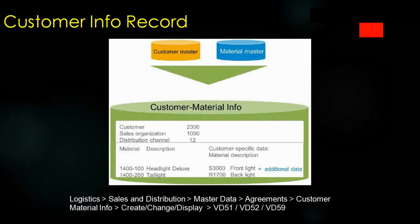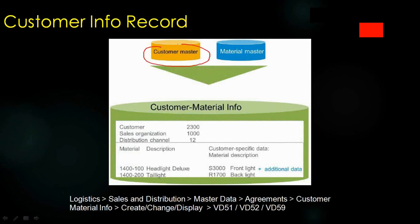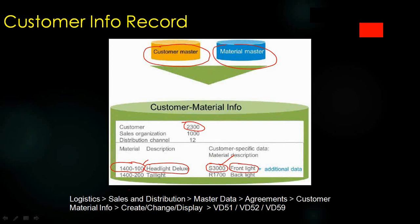What is a Customer Info Record? When you create a sales order, you enter the customer code and material code. For example, my customer code is 2300 and the material code is entered. The system should show — and the printout should also print — that in my company we call it 1400-100 with description 'Headlight Deluxe', but at the customer site they call it S3000 with description 'Front Backlight'. Another example: we call a material 1400-200, but the customer calls it R700.